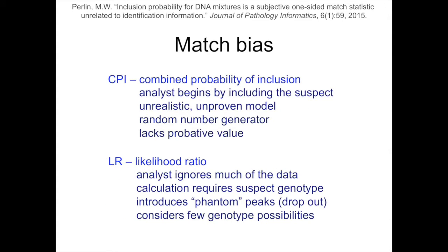There is also a match bias in DNA mixture interpretation at the level of calculating a statistic. With combined probability of inclusion (CPI), an analyst begins by first including the suspect, having already modified the data. CPI has an unrealistic, unproven model and has been shown to be a random number generator that lacks probative value. Even with likelihood ratios (LRs), analysts can ignore much of the data; many LR methods introduce phantom peaks not present in the data using dropout models, and typically consider very few of the possible genotypes.